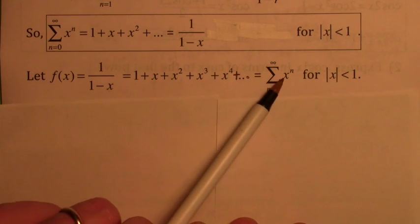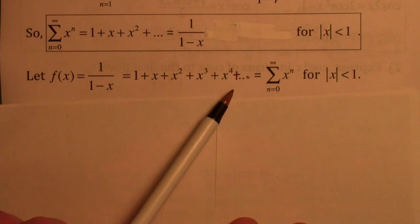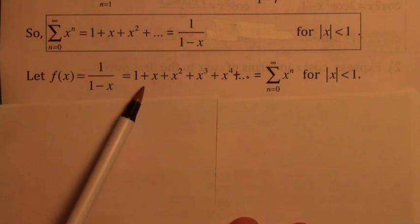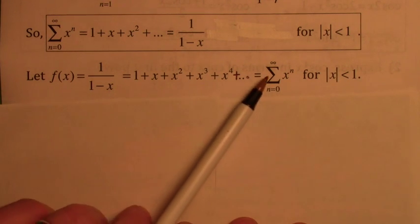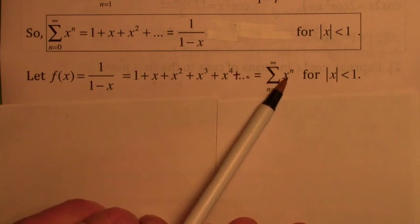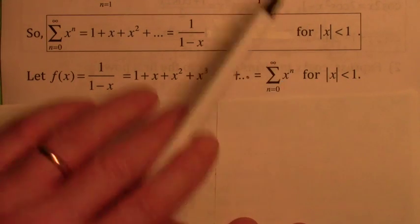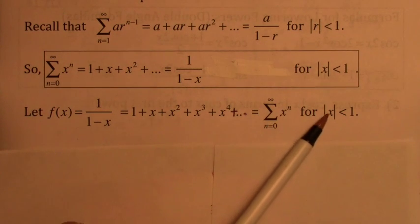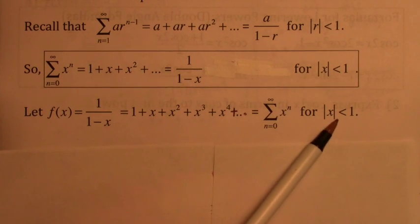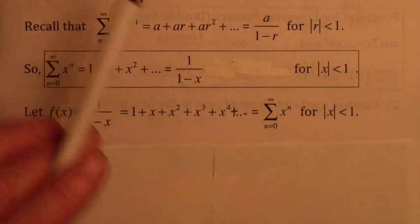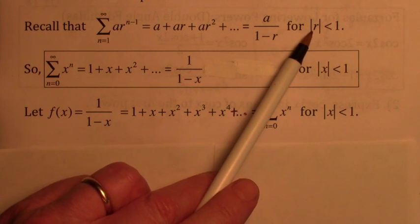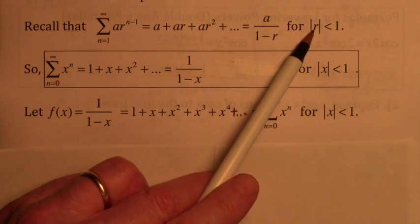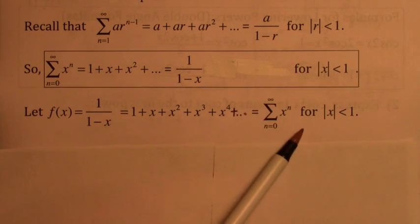It's called a power series because it has powers of x. It's going to converge as long as r — which in this case is x — has absolute value less than 1. So the absolute value of x has to be less than 1 for this to converge. The geometric series diverges when r equals plus or minus 1.